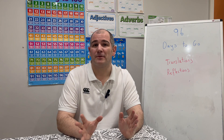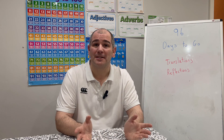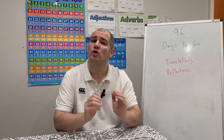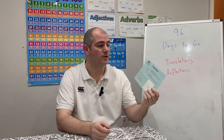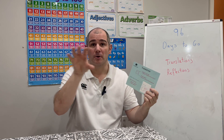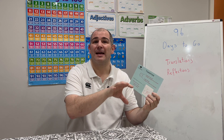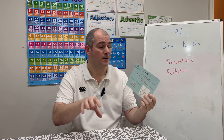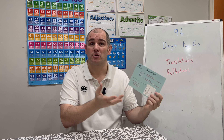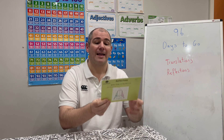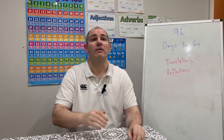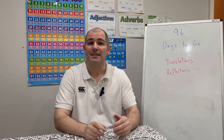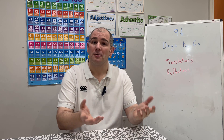Hi everyone, welcome to today's GCSE Higher Revision video. There are 96 days to go until your GCSE Maths exam and today we're going to focus on two topics. We're going to focus on translations — that's card number 81 on the revision card — where you slide a shape across a grid. And also we're going to go through reflections, that's card number 79, covering lines like x equals 4, y equals minus 2, y equals x, or y equals minus x. So let's get started.